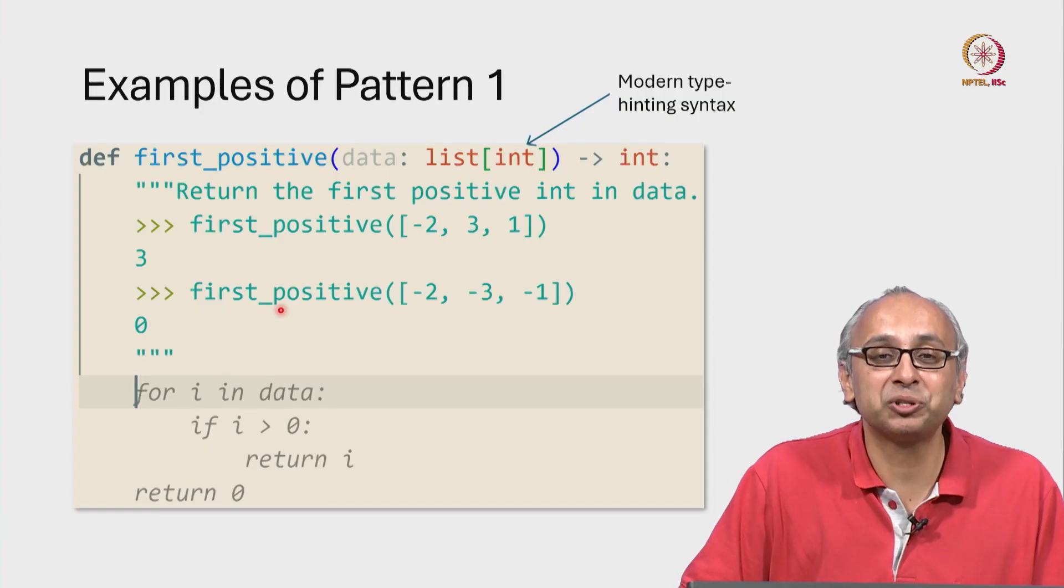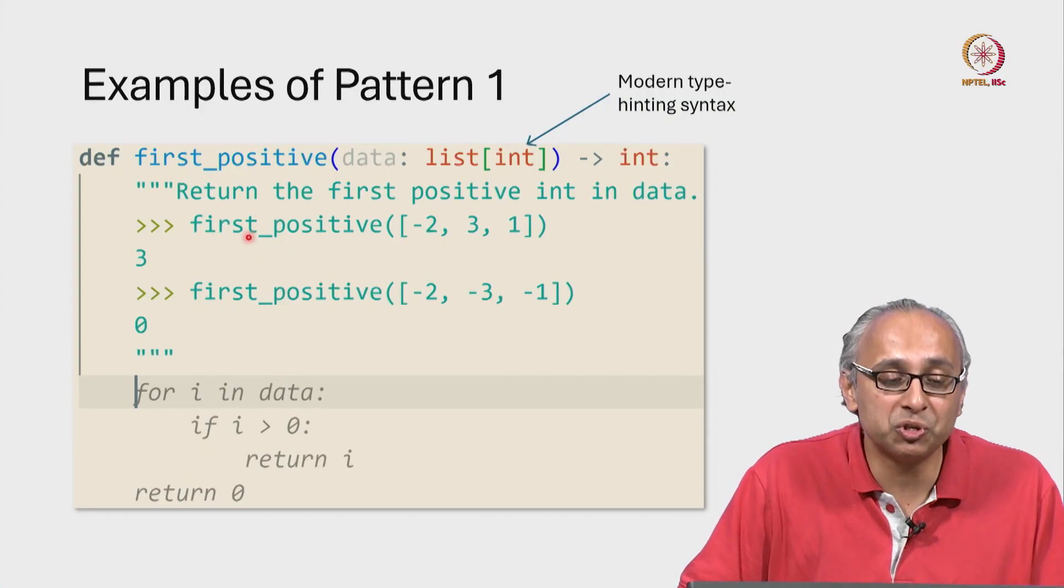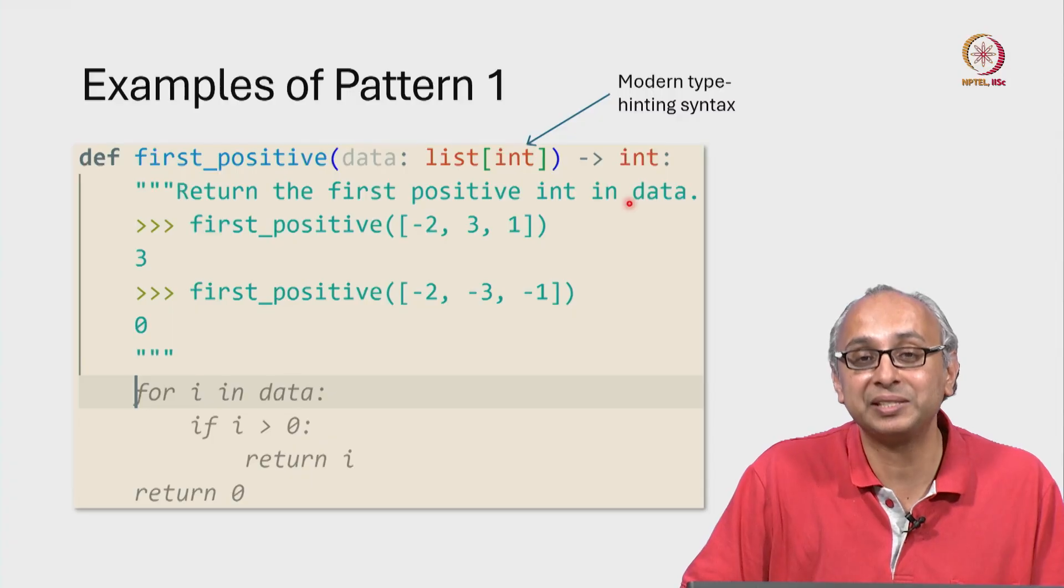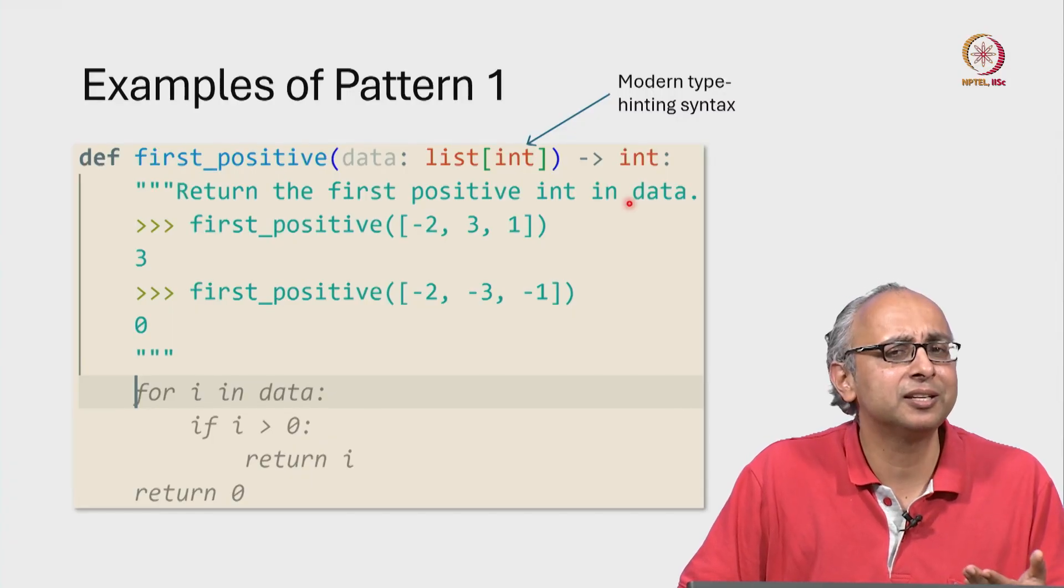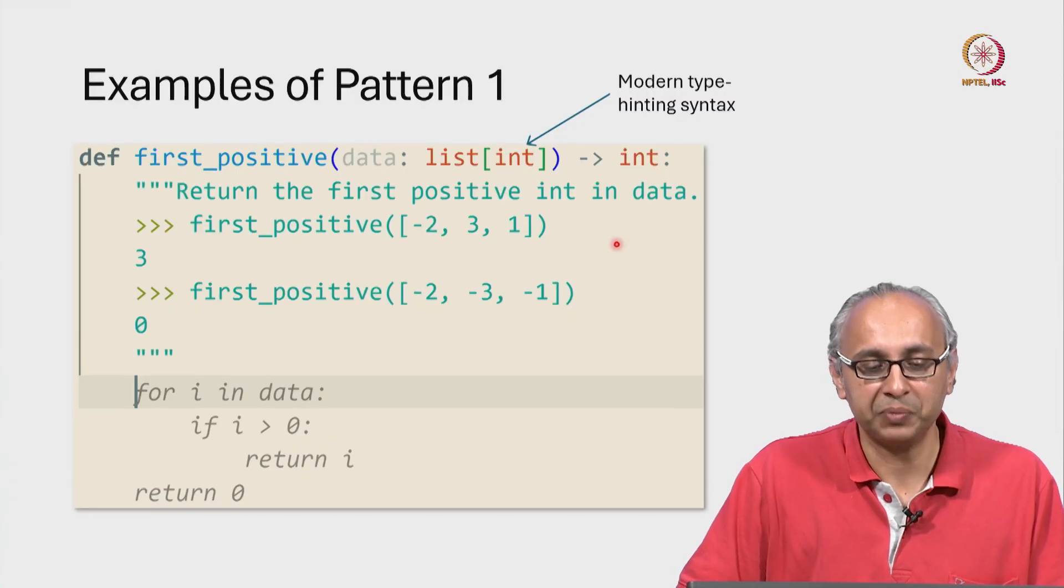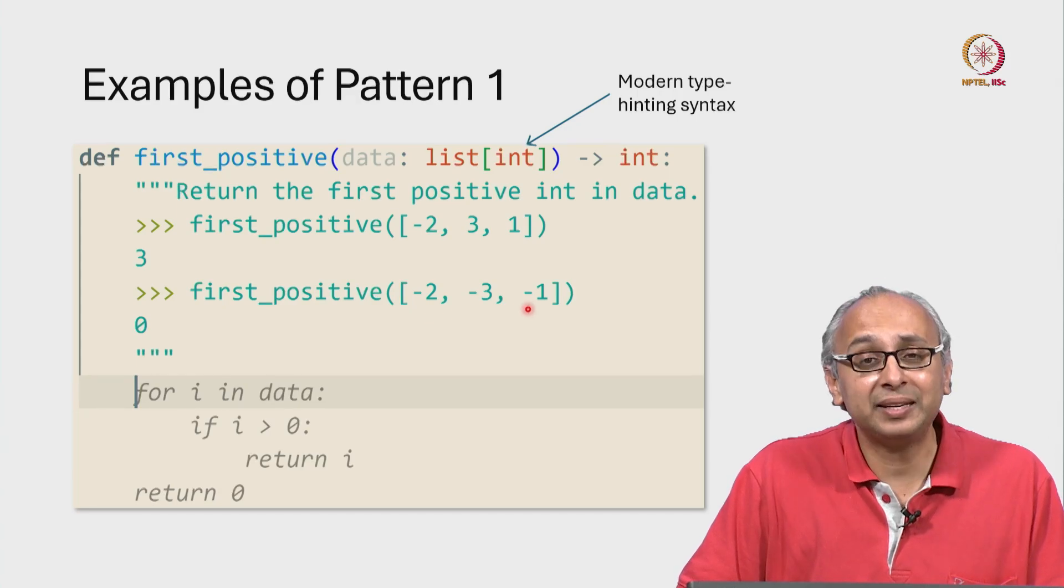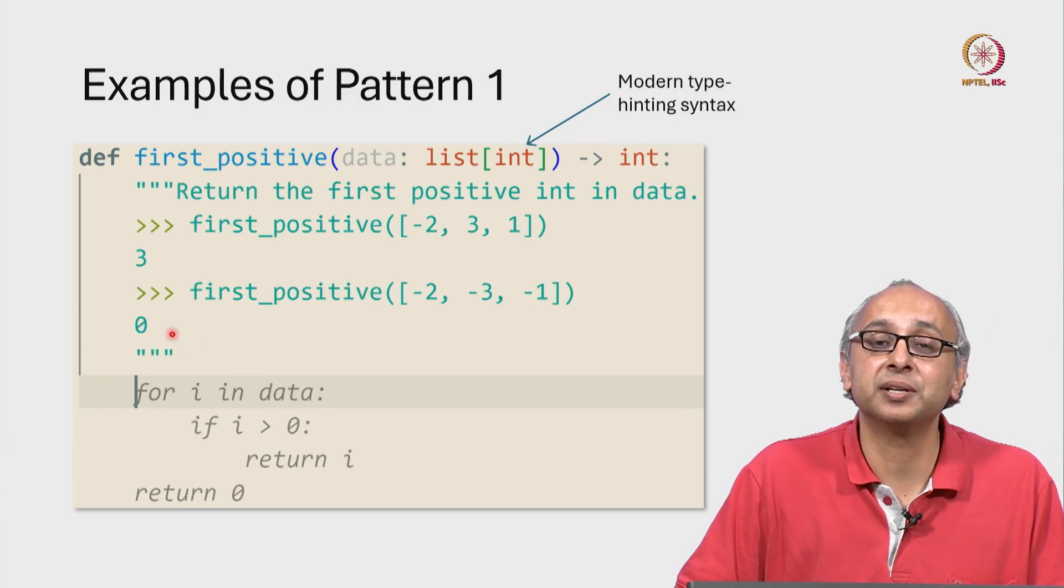The second doc test also tells us something very important that was not mentioned in this natural language statement. What if the list has no positive integers? For example, what about this list? Well, in that case, this function returns 0.